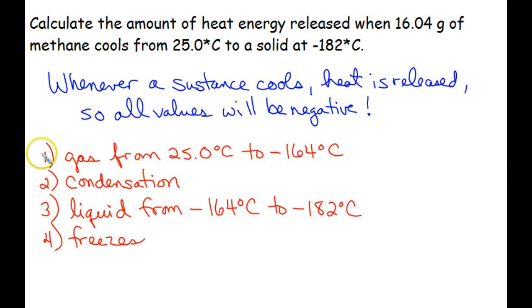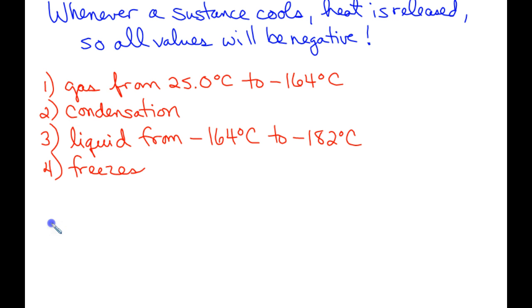So let's do our first calculation. It's not a phase change, it's simply cooling from 25 to negative 164. So our equation is Q equals mcΔT, where Q is heat, m is mass, c is the specific heat capacity, and delta T is the final temperature minus the initial temperature. So we have 16.04 grams. And remember, specific heat capacities are phase specific. We are in a gas phase here, so we need to use the specific heat capacity for methane when it's a gas. And that's 2.225 joules per gram degree Celsius. And the final temperature is negative 164 minus the initial, which was 25.